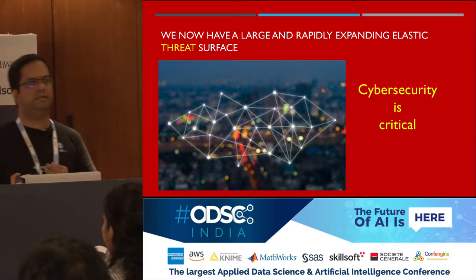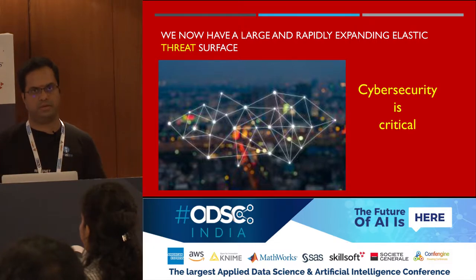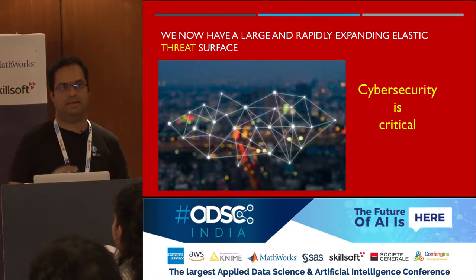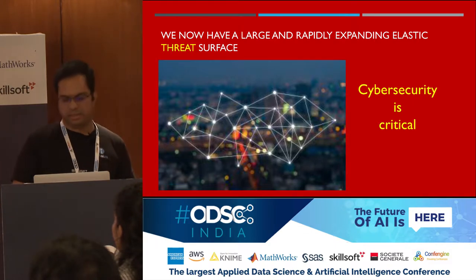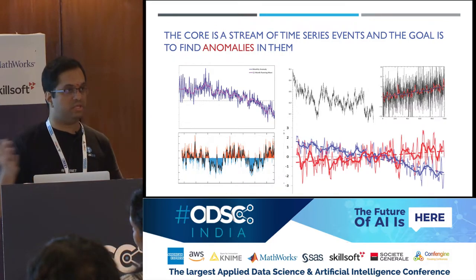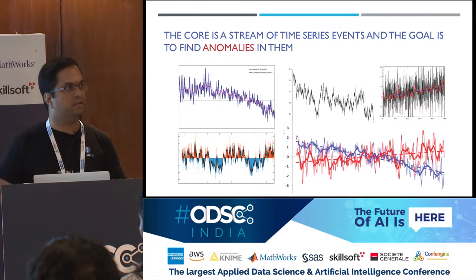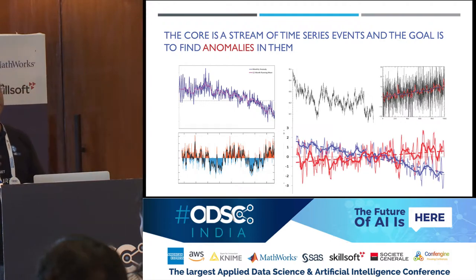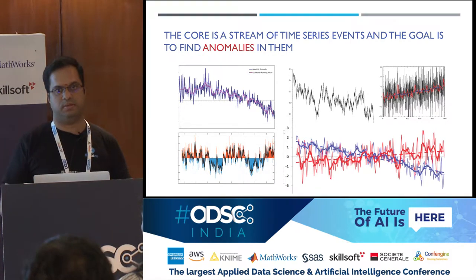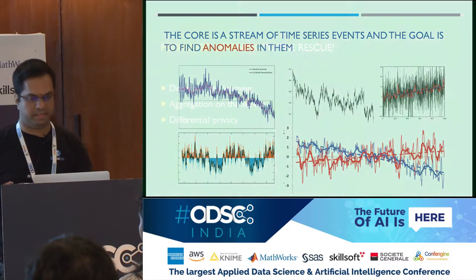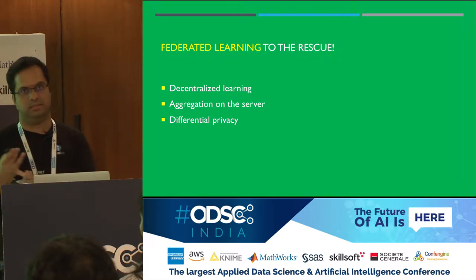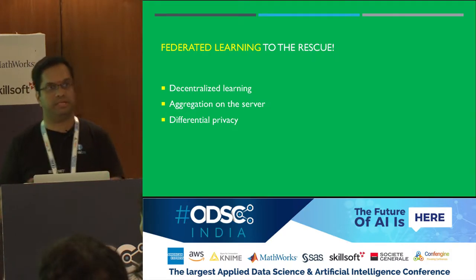When you have more than 10 billion plus devices rapidly growing and moving around all the time, the attack surface area is very elastic — it keeps expanding — and cybersecurity becomes extremely critical. One of the core tasks in cybersecurity is anomaly detection, which in simple terms involves a bunch of time series. You have various events happening across multiple use cases and the goal is to find anomalies in them, either within a time series or across various time series. This is where federated learning helps us.